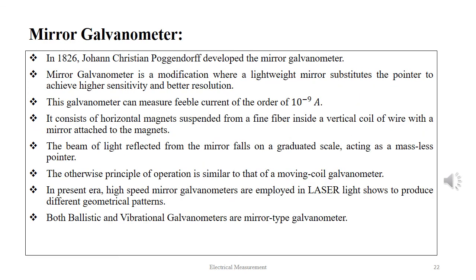In 1826, Johann Christian Poggendorff developed the mirror galvanometer. It is a modification where a lightweight mirror substitutes the pointer to achieve higher sensitivity and better resolution, and it can measure feeble currents of the order of 10⁻⁹ A. It consists of horizontally placed magnets suspended from fine fiber inside a vertical coil of wire, with a mirror attached to the magnets. The beam of light reflected from the mirror falls on a graduated scale acting as a massless pointer. The principle of operation is otherwise similar to a moving coil galvanometer. In the present era, high-speed mirror galvanometers are employed in laser light shows to produce different geometrical patterns. Both ballistic and vibrational galvanometers are mirror type galvanometers.